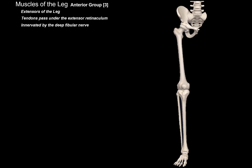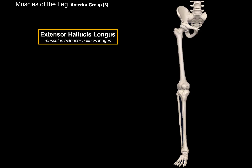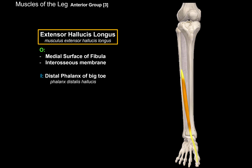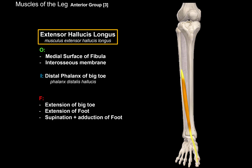Another thing they all have in common is that they are all innervated by the deep fibular nerve. The first muscle is the extensor hallucis longus. This muscle originates from the medial surface of the fibula and inserts at the distal phalanx of the big toe. When it contracts, it causes extension of the big toe, extension of the foot, and also supination and adduction of the foot.